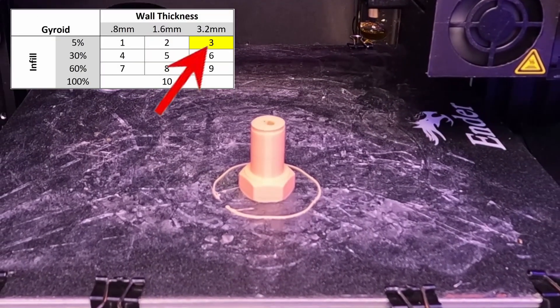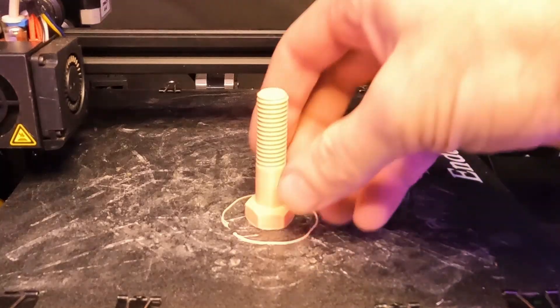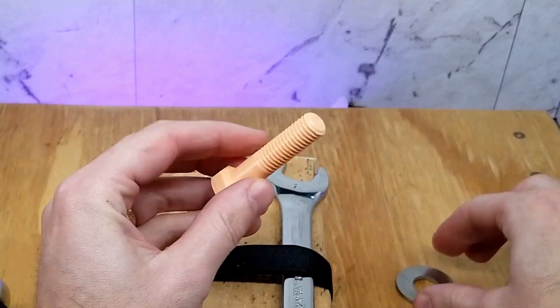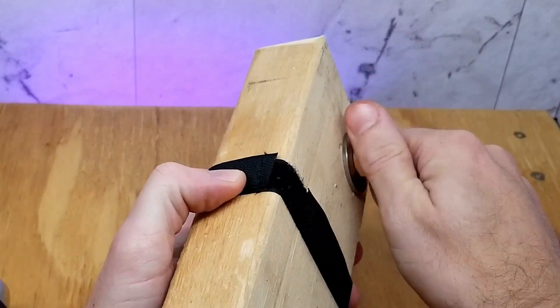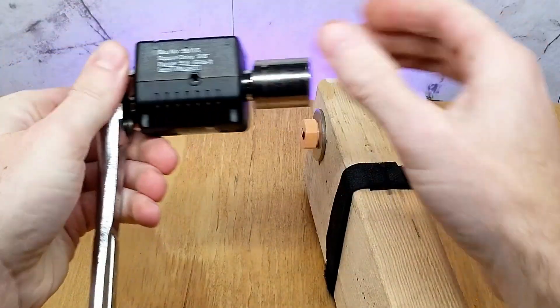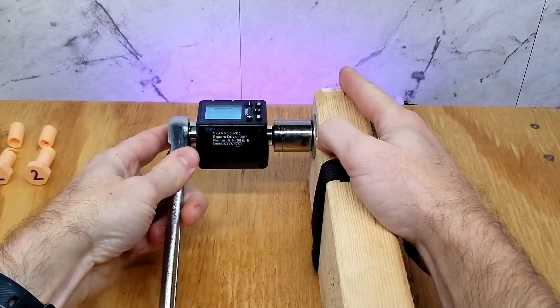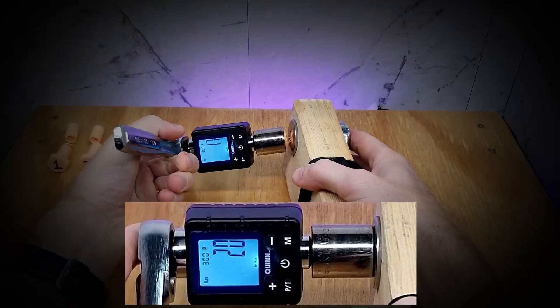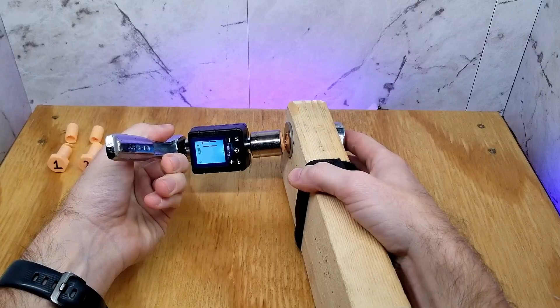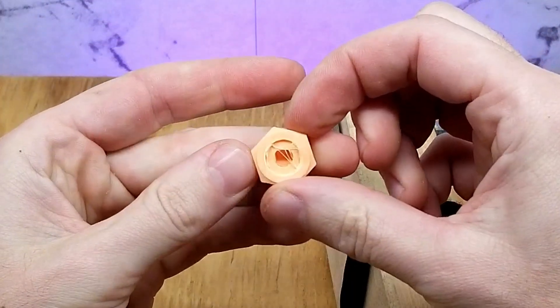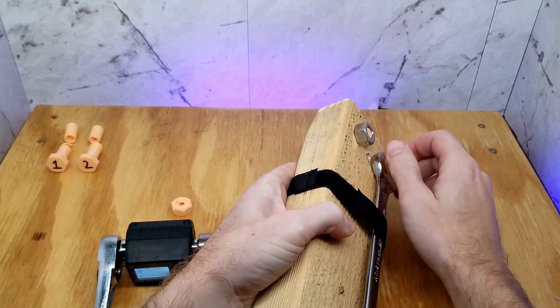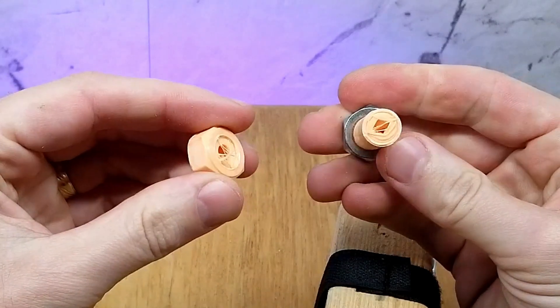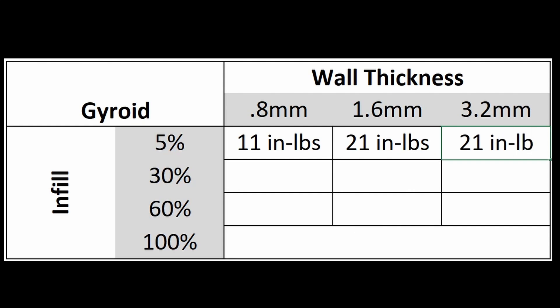And off to model number 3 with the 3.2mm wall thickness and 5% gyroid infill. You can really see the wall thickness on this one. Anyways, let's get it labeled and in the fixture to be tested. I expected this one to be a little bit higher than the previous one with the thinner wall, but it reads 17 inch pounds. But if you caught in the video earlier on the previous push, it displayed 21 inch pounds. And this one broke in a completely different spot too, right underneath the head. I'm going to get the other half of it out just to get a clearer picture of what happened. It almost looks to me like there's not a 3.2mm wall here. This one may be a slicer attributed failure. Anyways, I'm just going to record the value in the chart as 21 inch pounds and decide later if I want to go back and repeat this one.